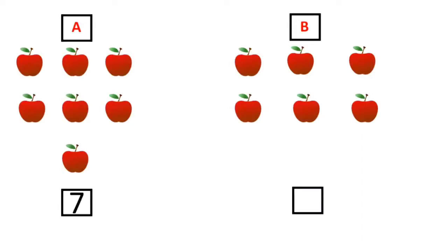Let's count how many are there in set B: 1, 2, 3, 4, 5 and 6. Now children, tell me which number is a smaller number? Between 2 numbers, the number which comes first is a smaller number. So when we start counting from 1, 2, 3, 4, 5, 6 and then comes 7. So between 7 and 6, which number is a smaller number? Number 6.